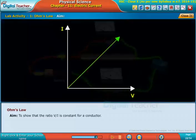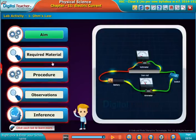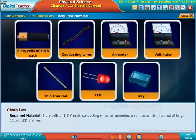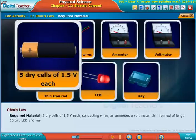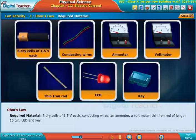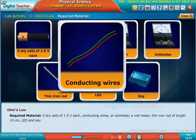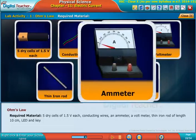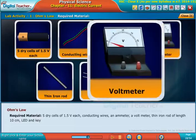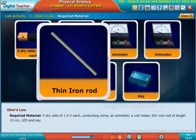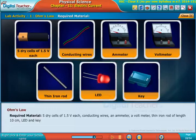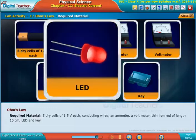Required materials are: five dry cells of 1.5 volts each, conducting wires, an ammeter, a voltmeter, an iron rod of length 10 centimeters, LED, and key.